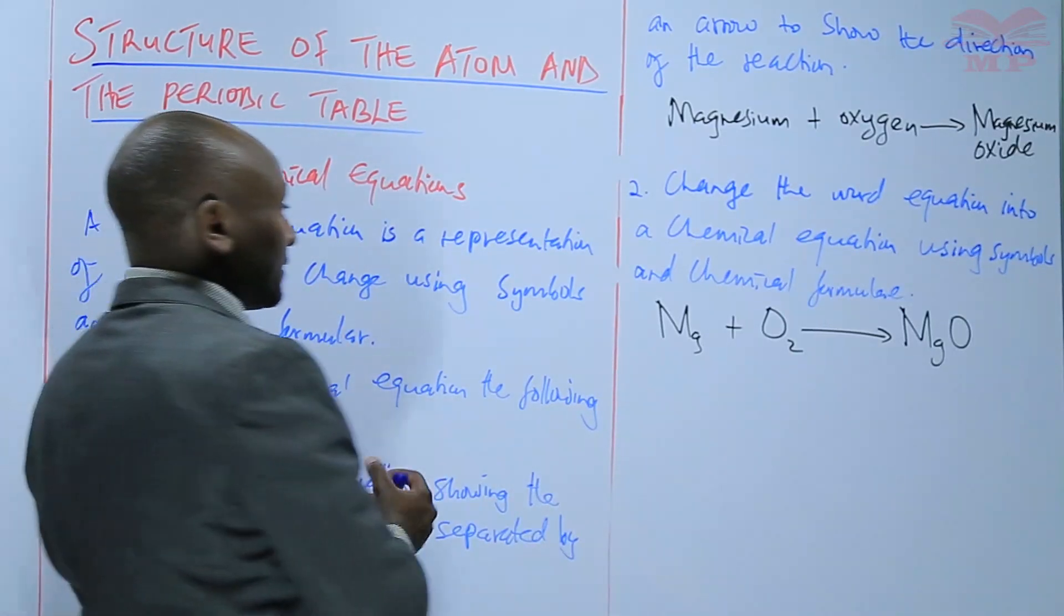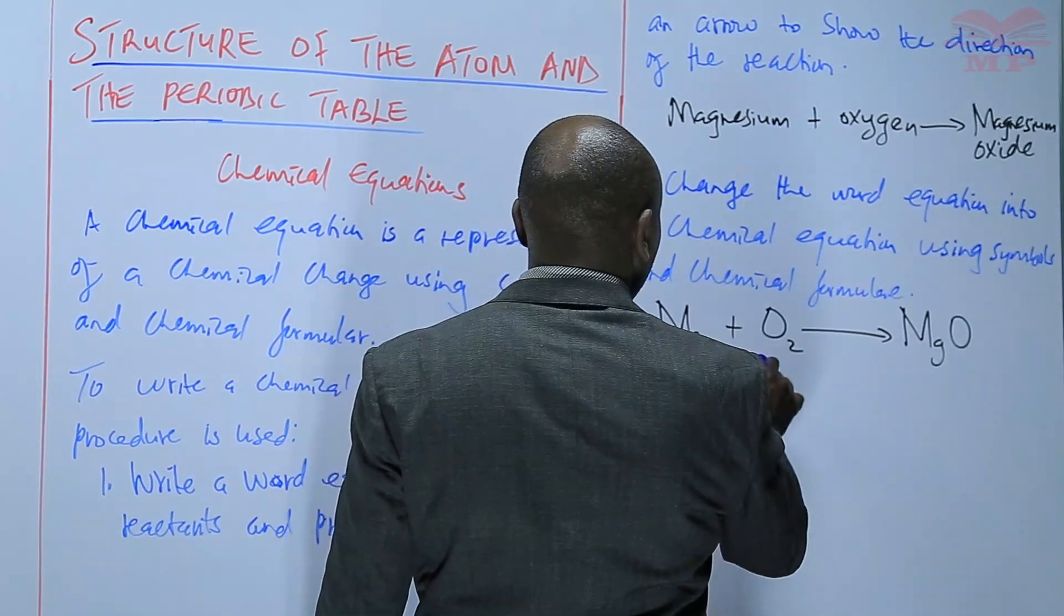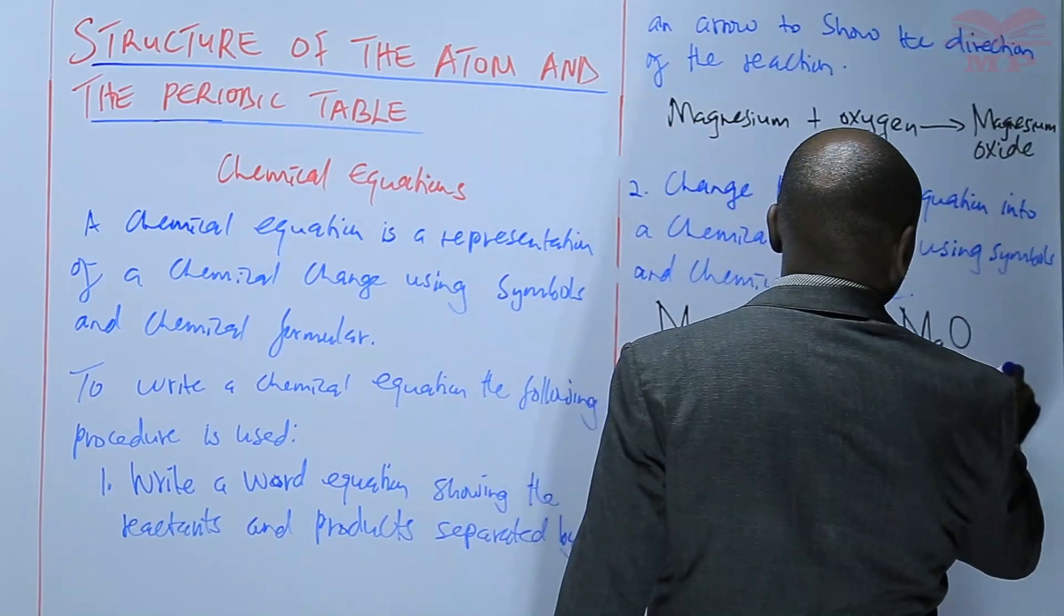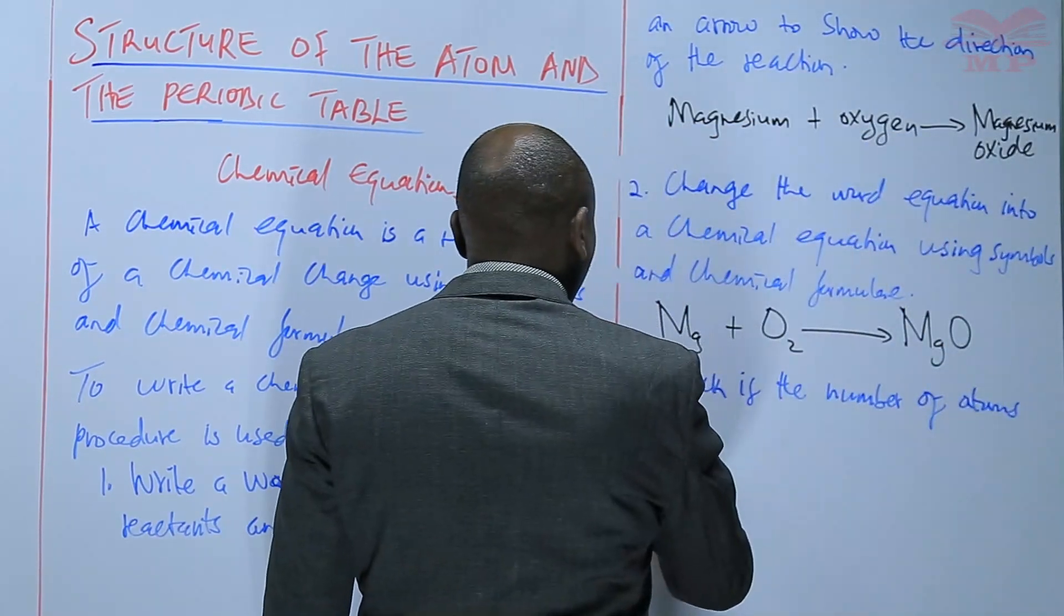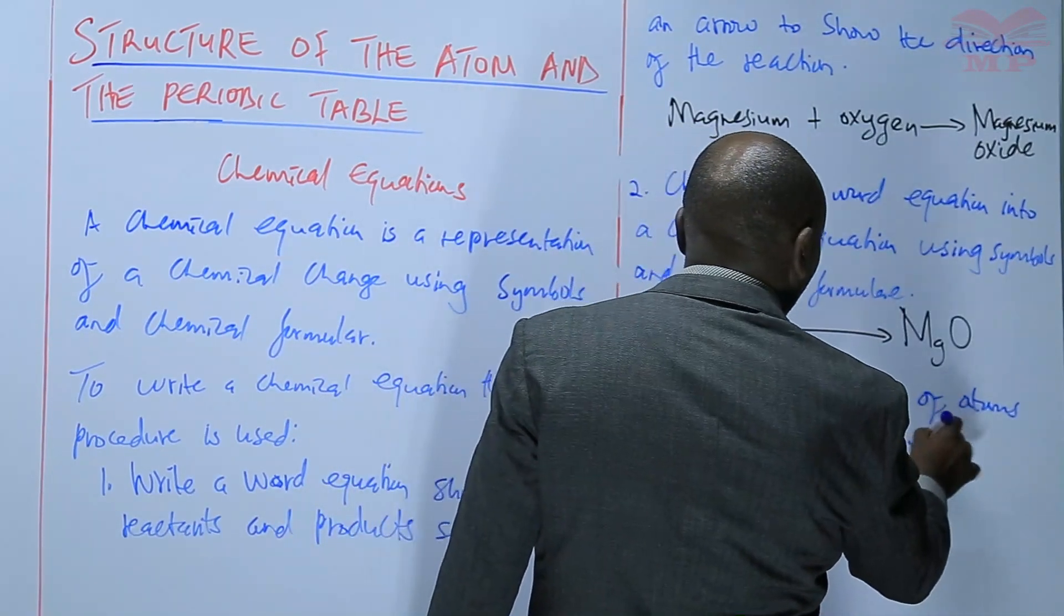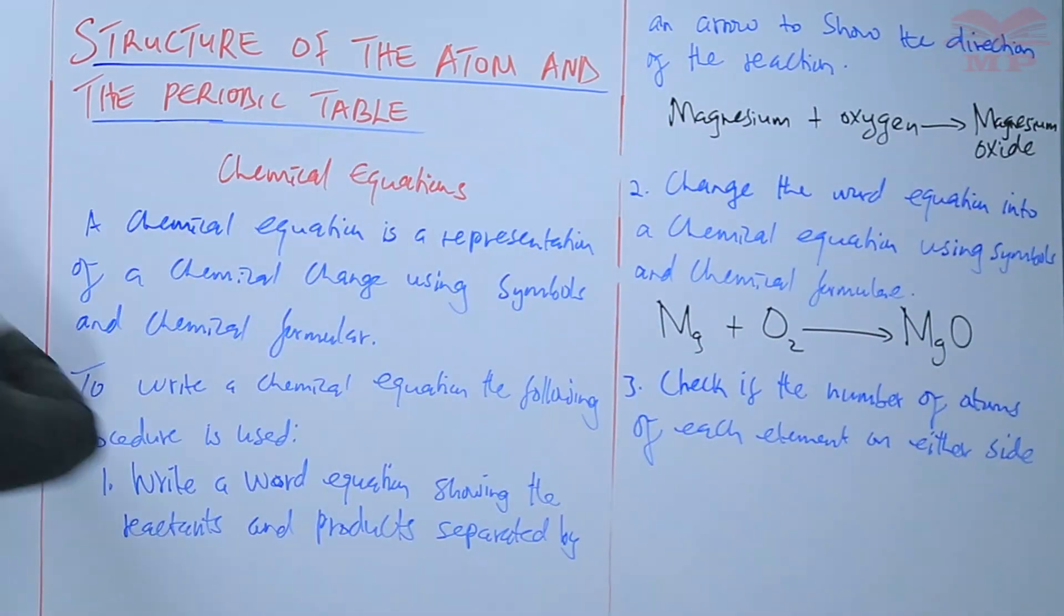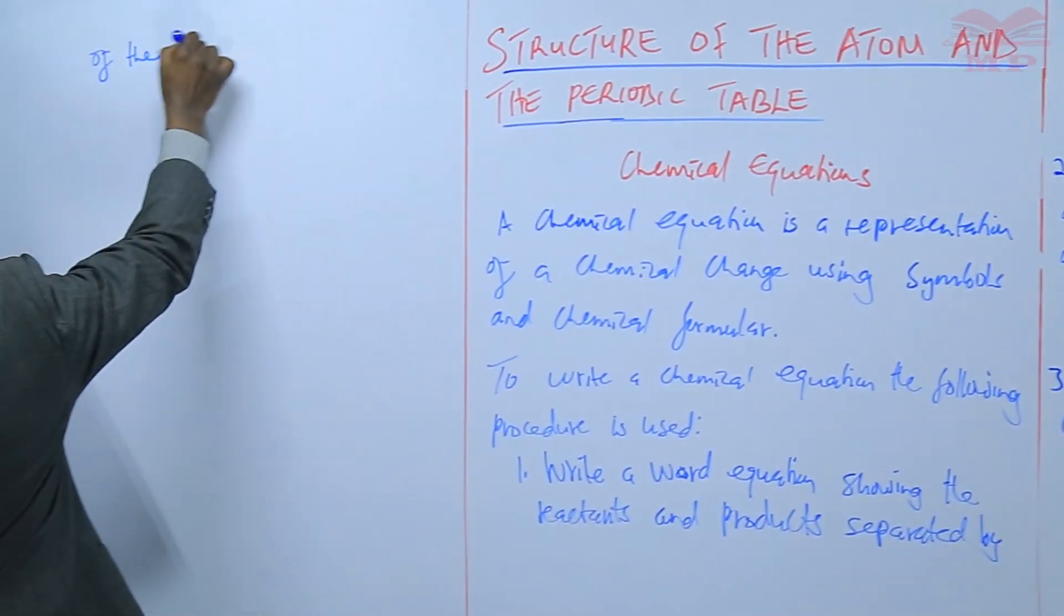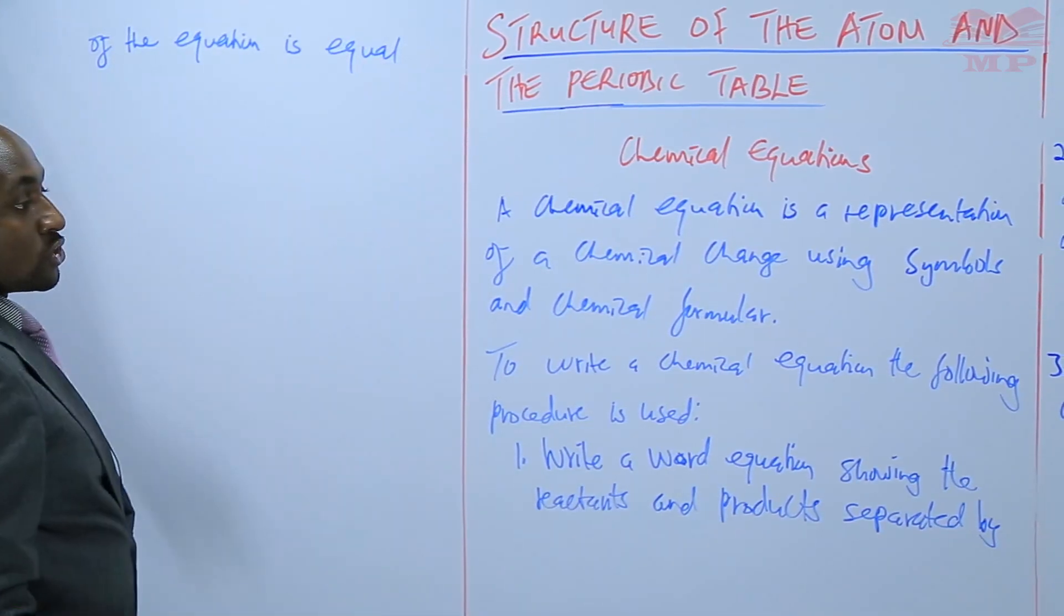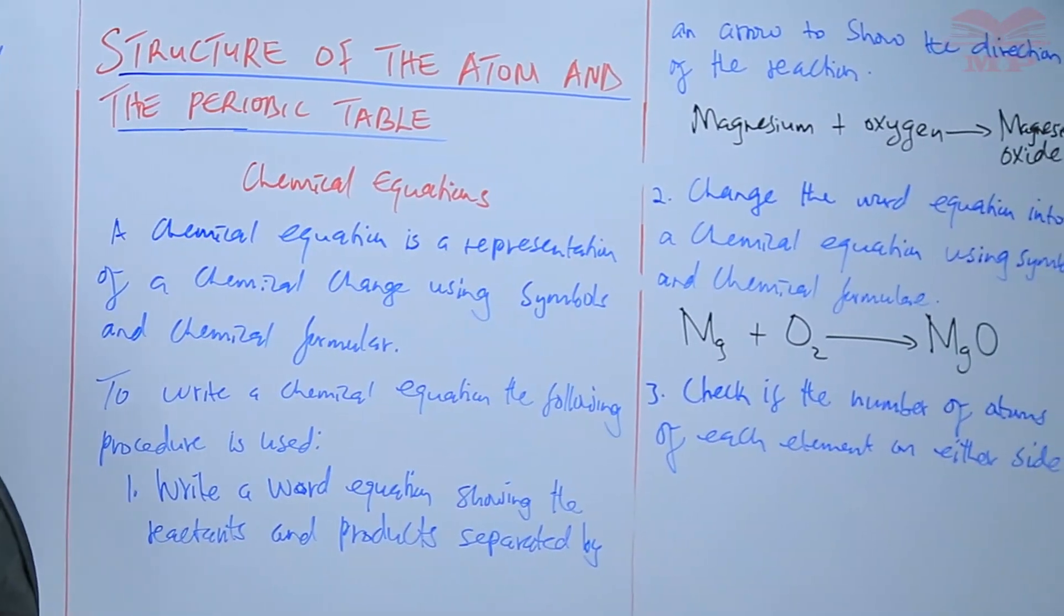After that, the next step is to check if the number of atoms of each element on either side of the equation is equal.